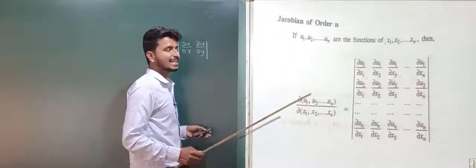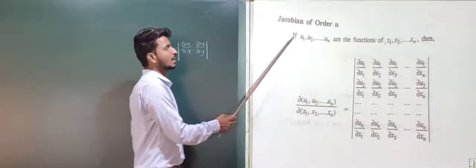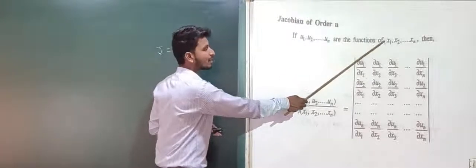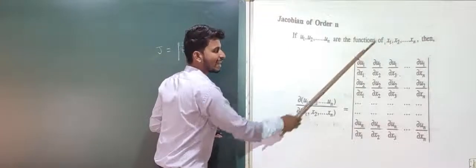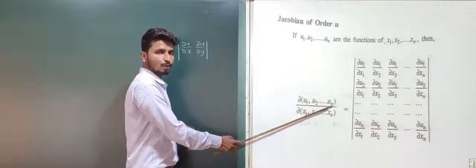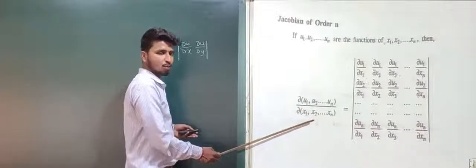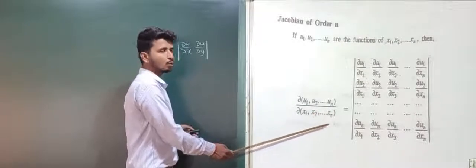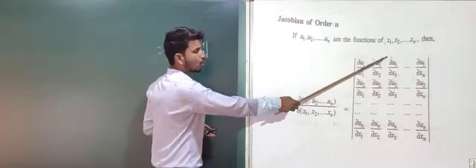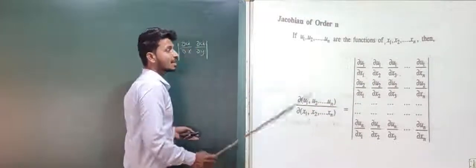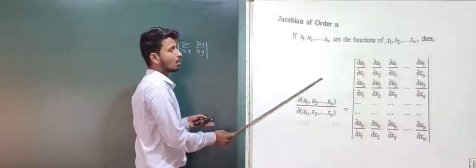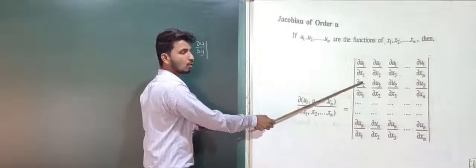Next we will see the Jacobian of order n. Here we have n number of functions and n number of independent variables. If u₁, u₂, ..., uₙ are the n functions of independent variables x₁, x₂, ..., xₙ, then the Jacobian is written as ∂(u₁, u₂, ..., uₙ)/∂(x₁, x₂, ..., xₙ), represented in determinant form where the first row is ∂u₁/∂x₁, ∂u₁/∂x₂, ..., ∂u₁/∂xₙ.